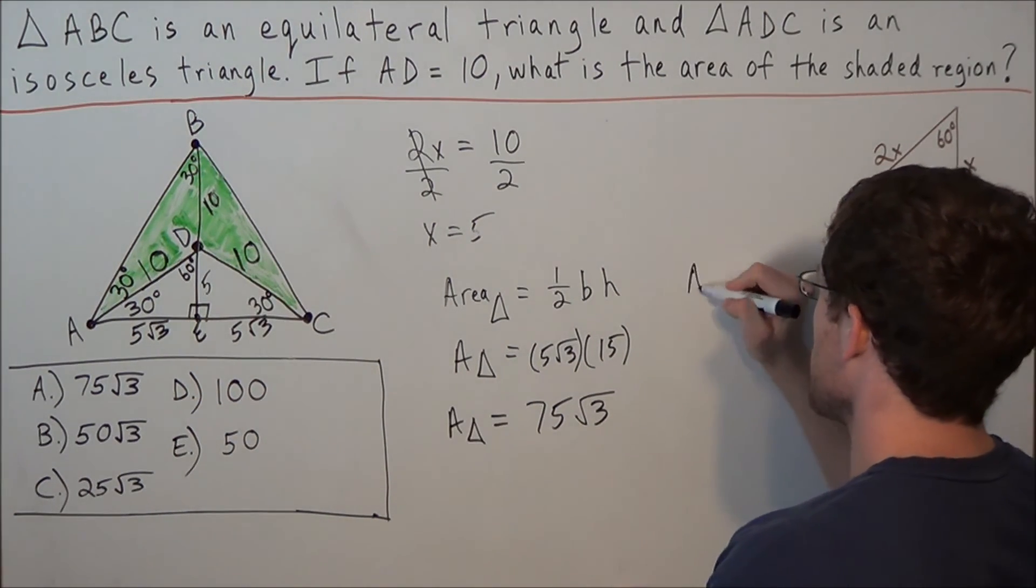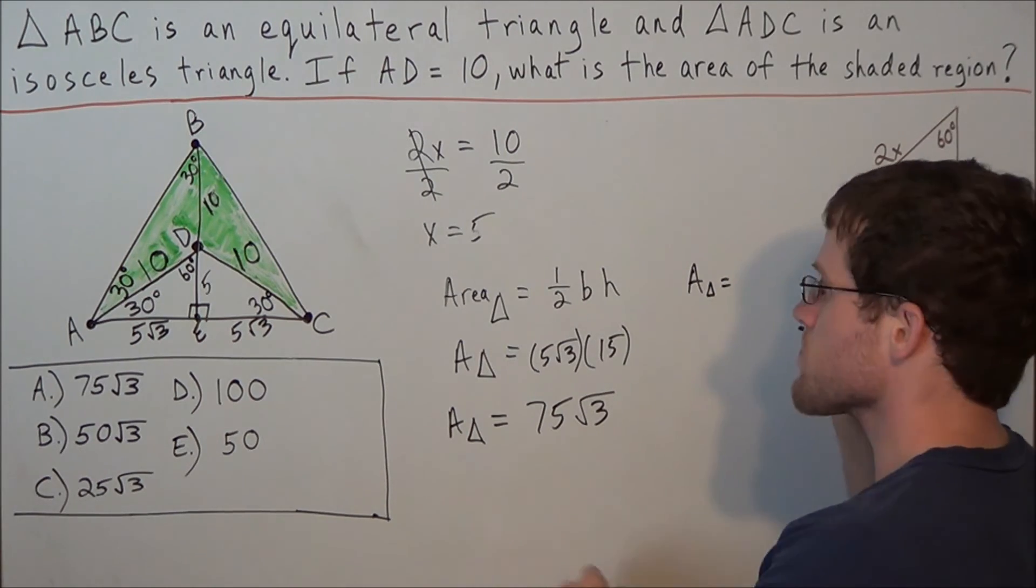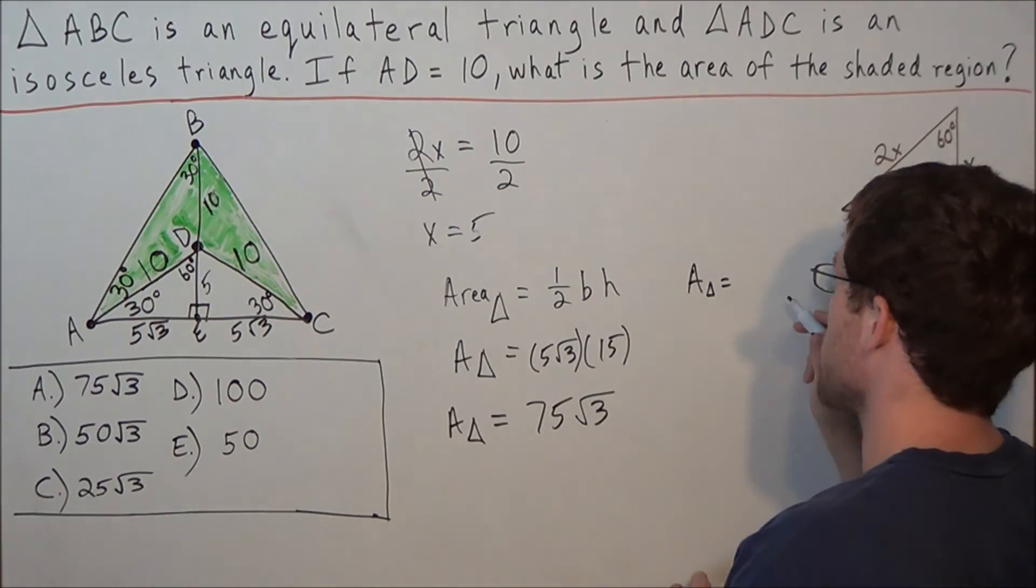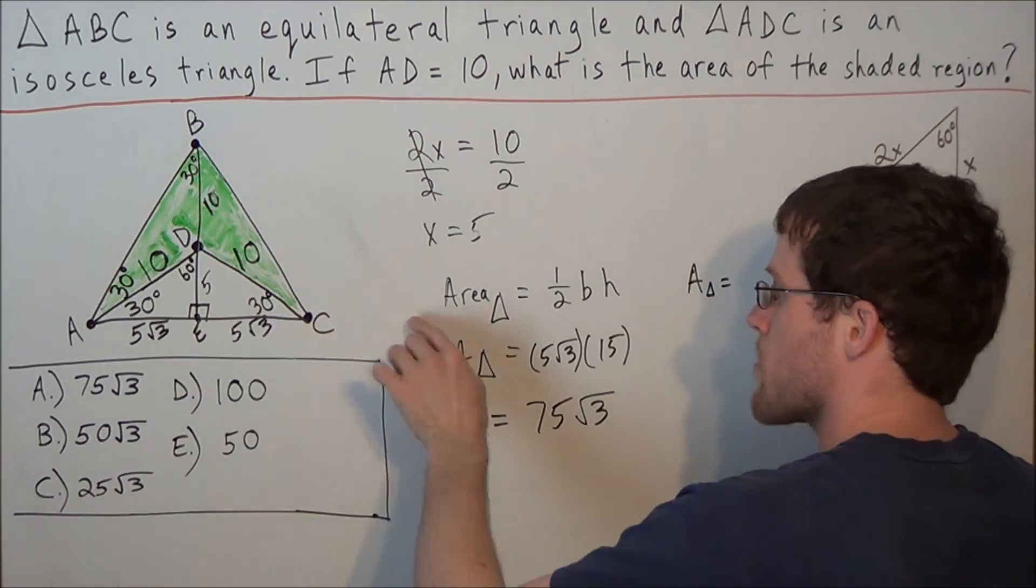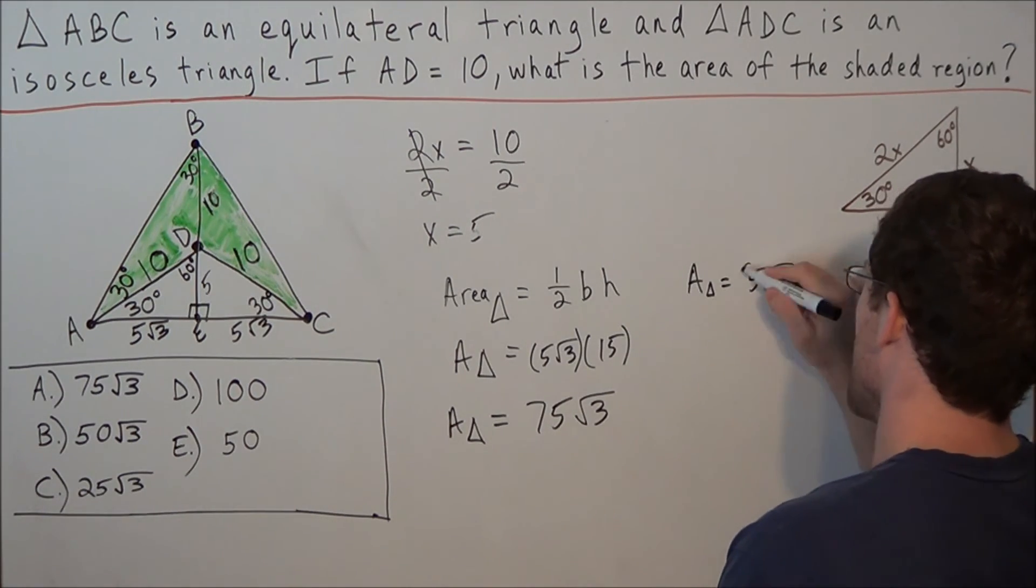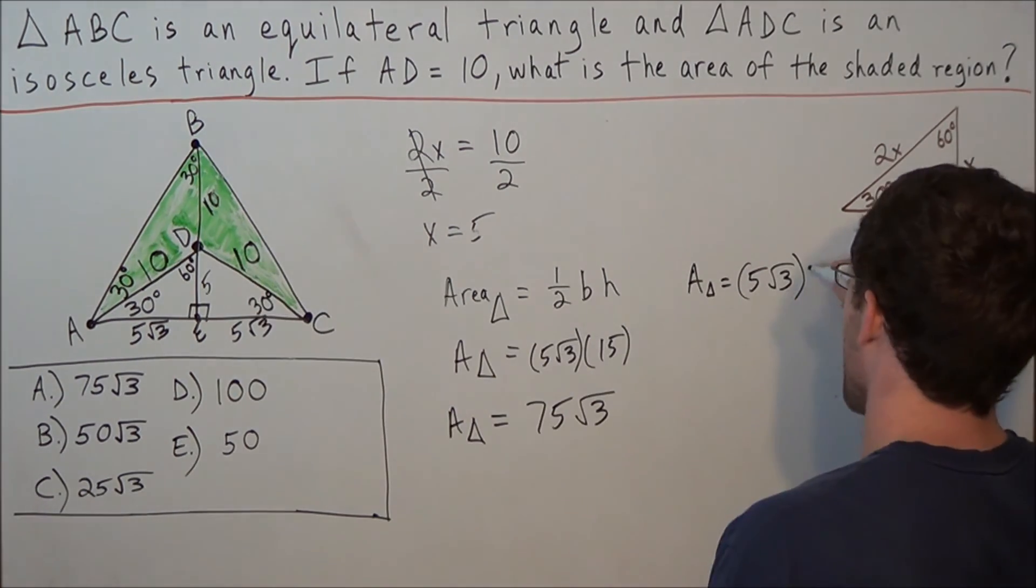So now for the area of the little triangle, we note that the height of the little triangle is 5. So we're looking at one half the base. But remember, one half the base is 5 radical 3. And we're multiplying by the height, 5.